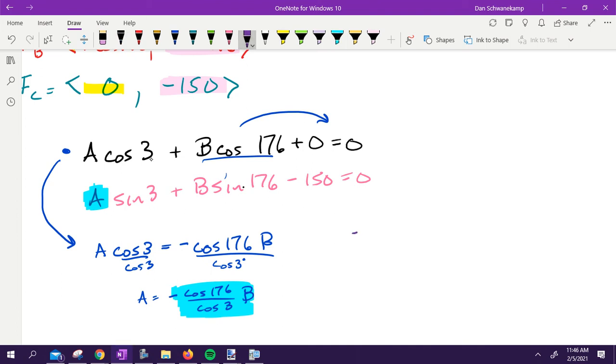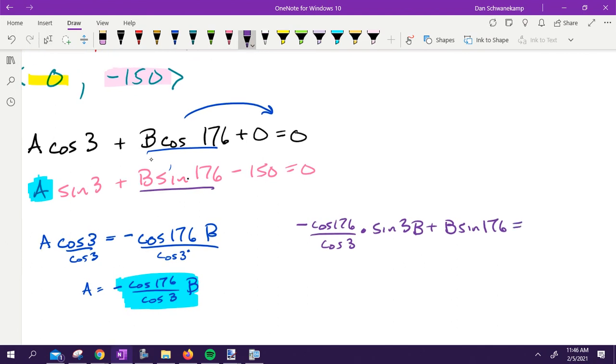So my new problem is going to look like this: negative cosine 176 over cosine of three times sine of three, because that's what's left over, times the letter B, plus B sine of 176. That's just this guy. What's that all going to be equal to? 150. I'm going to move that 150 to the other side, so it's going to become positive.